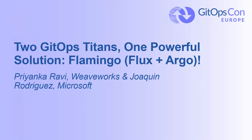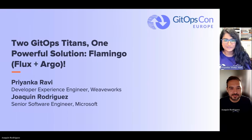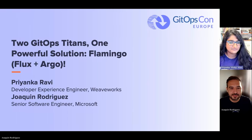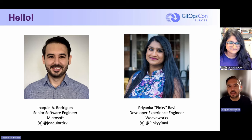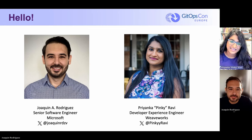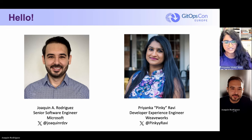Thank you for joining our talk: two GitOps titans, one powerful solution, which is Flamingo. We're going to be chatting about how to combine Flux and Argo. My name is Joaquin Rodriguez, I'm a senior software engineer at Microsoft. My name is Priyanka Ravi, I also go by Pinky, and I am a developer experience engineer at Weaveworks.